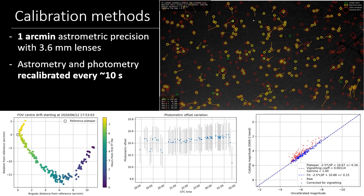We put a lot of emphasis on calibration methods. With 3.6 millimeter lenses, we can achieve astrometric precision of about one arc minute. We found that we have to recalibrate the camera pointing quite often — in about eight hours of observation, the camera can move as much as 10 arc minutes due to thermal effects, which is an order of magnitude more than the astrometric precision itself. We also recalibrate the photometric offset throughout the night due to changing sky conditions, guaranteeing the quality of positional and photometric measurements.